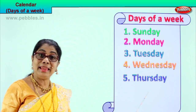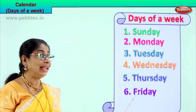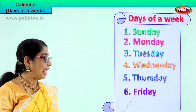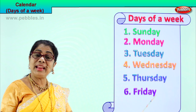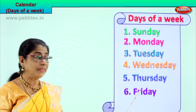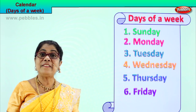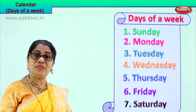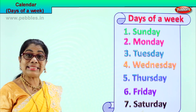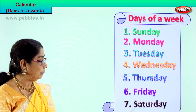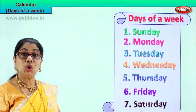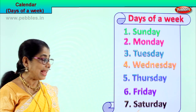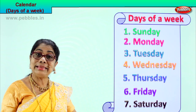Which is the sixth day of the week? The sixth day of the week is Friday. Spell Friday. F-R-I-D-A-Y. Friday. Which is the last day and the seventh day of a week? The seventh day of the week is Saturday. Spell Saturday. S-A-T-U-R-D-A-Y. Saturday.